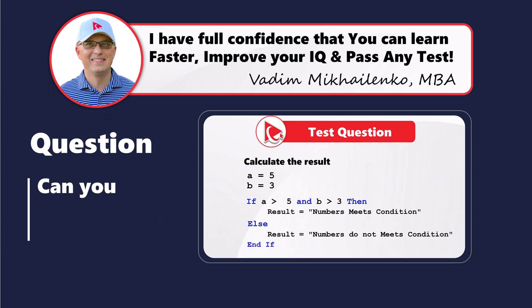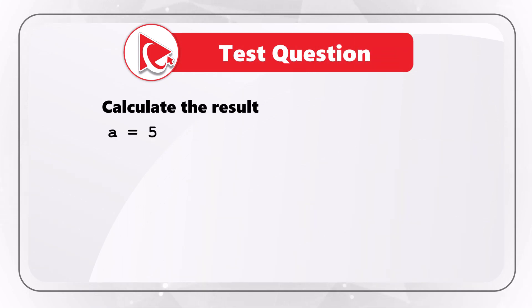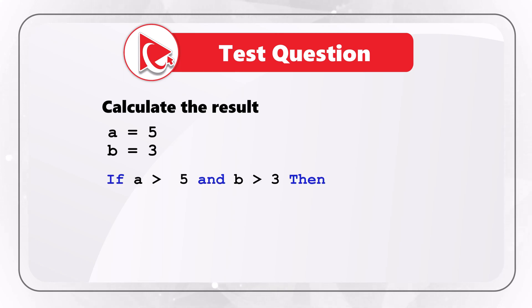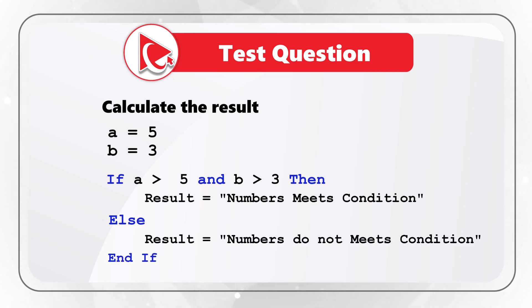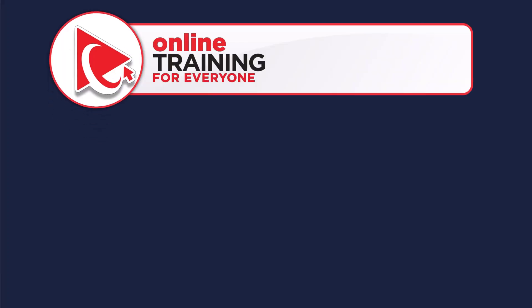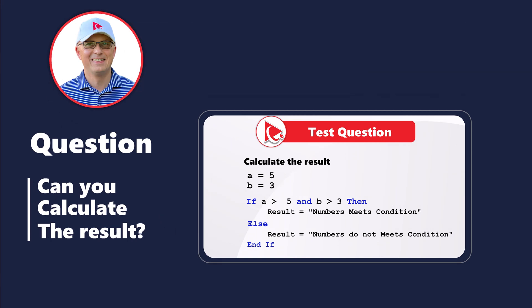Here's an interesting question where you need to calculate the final value of result. You're presented with a subroutine where A equals 5 and B equals 3. The condition is: if A is greater than 5 AND B is greater than 3, then result equals 'meets condition'; else result equals 'does not meet condition.' If you have a better way to solve it, please post in comments.